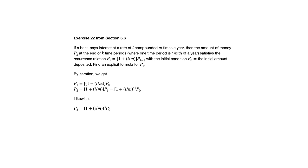Each time we're multiplying a factor by the previous term. Every time we increase the index by 1, we're increasing that exponent by 1. So P sub n is that factor 1 plus i over m, raised to the nth power, times the initial amount deposited. You might already be familiar with that formula — it's the well-known formula for compound interest — but here we're deriving it in the context of a recurrence relation. I hope you found this video helpful.